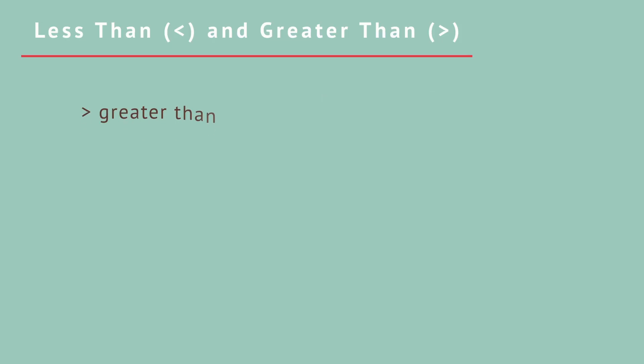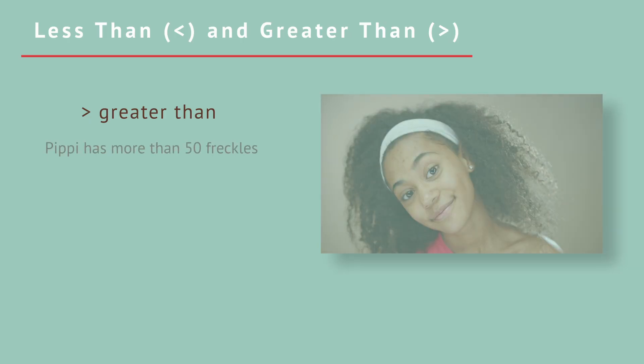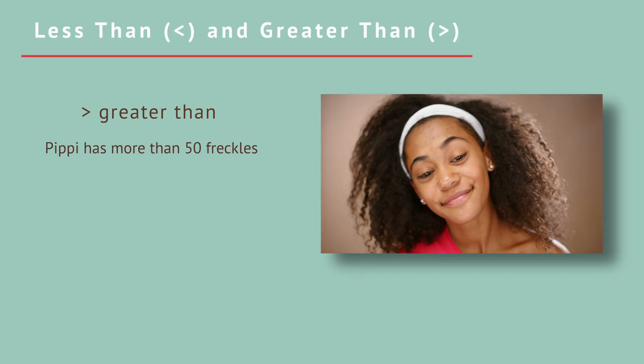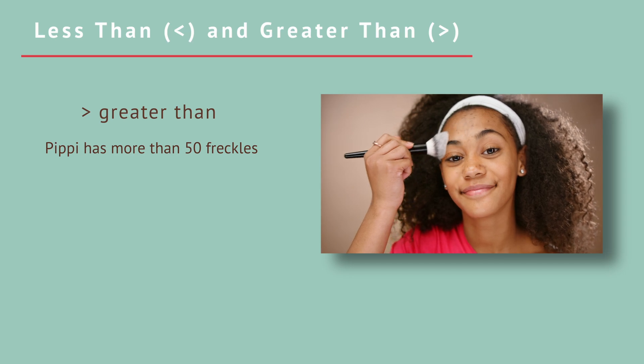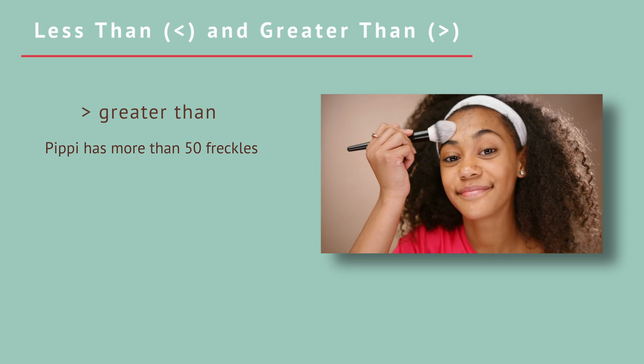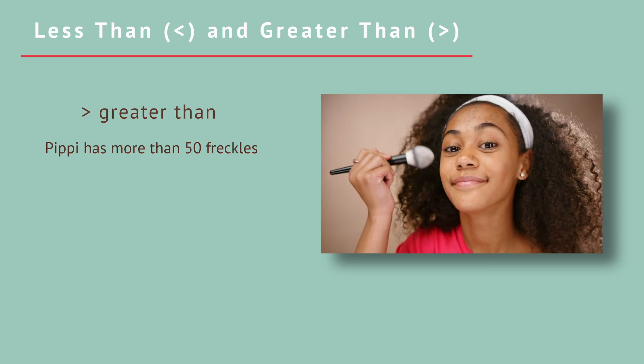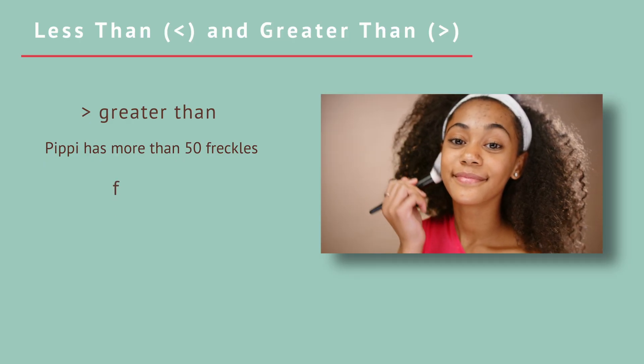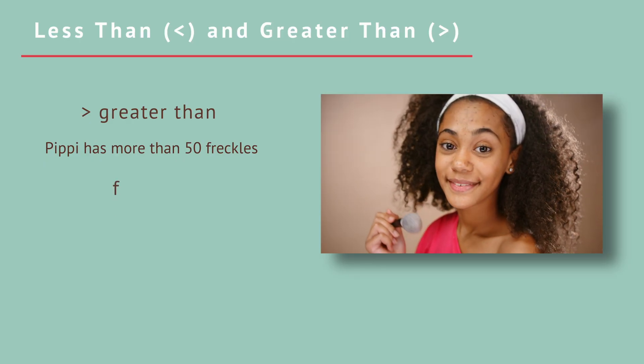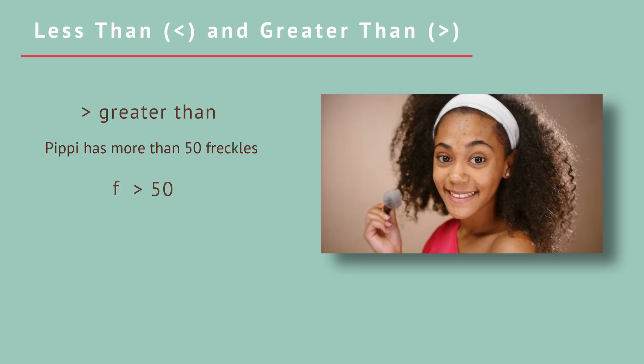Greater than is the opposite of less than, and its symbol faces the other direction. Greater than means one thing is larger than another, or there's more of that thing than something else. Hippie has more than 50 freckles. That's pretty lucky. We give the number of freckles a variable name, because we don't know how many freckles exactly. Let's call this number F. We can then translate from words into math language like this. F is greater than 50.